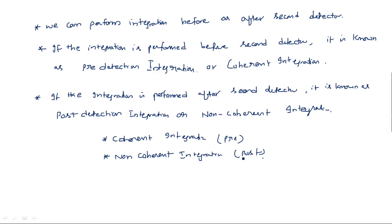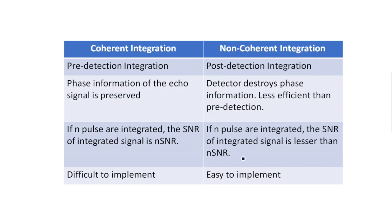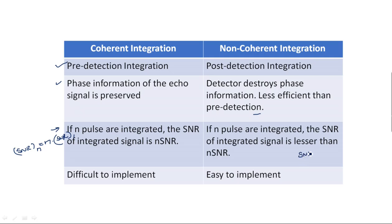The key differences between coherent and non-coherent integration: coherent integration is pre-detection integration; non-coherent integration is post-detection integration. Since coherent integration is performed before the second detector, it preserves the phase information of the received echo signal. Post-detection (non-coherent) integration destroys the phase information and is therefore less efficient than pre-detection integration.